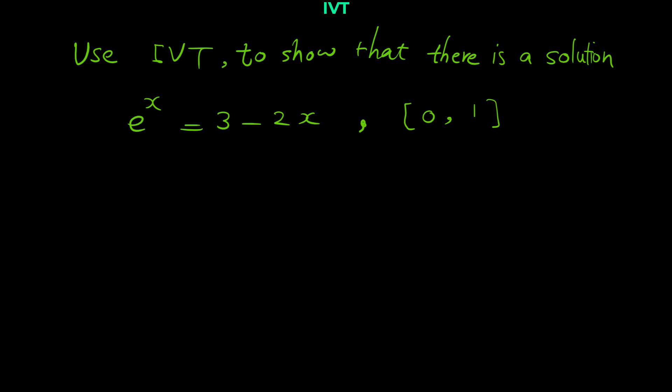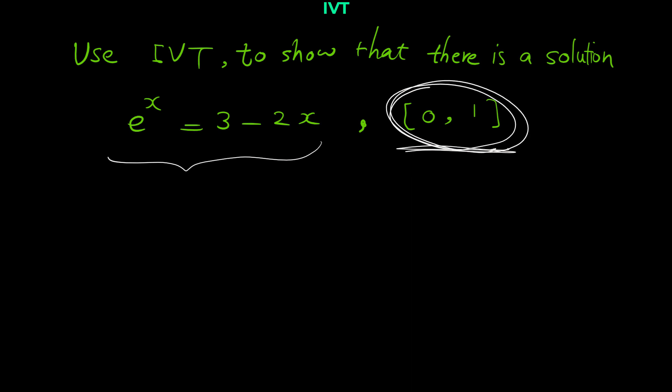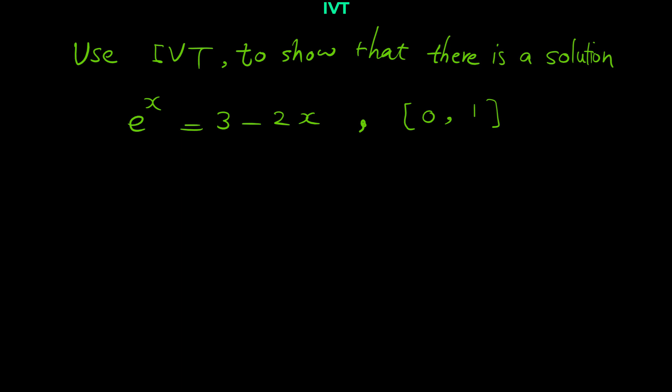In this video we want to do some questions using the Intermediate Value Theorem, or IVT. The first question is: use IVT to show that there is a solution for this equation in the interval 0 to 1. So we want to prove that somewhere between 0 and 1, e to the x is equal to 3 minus 2x.